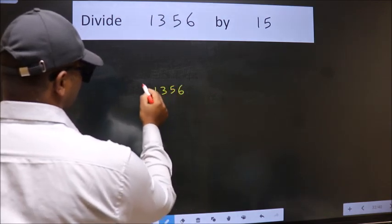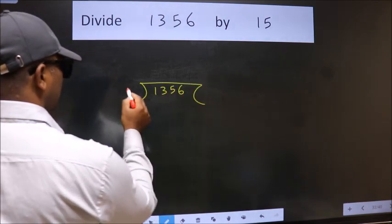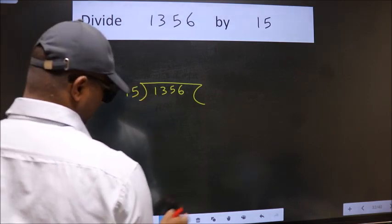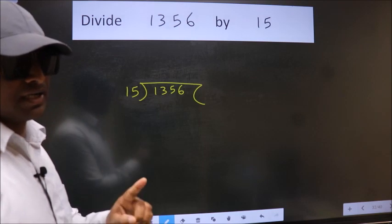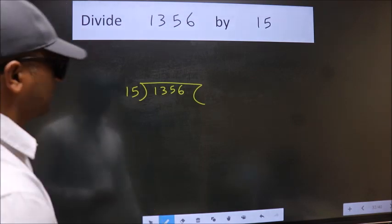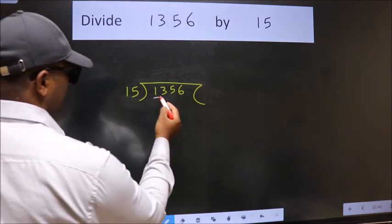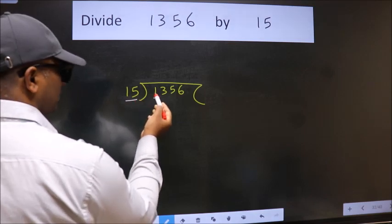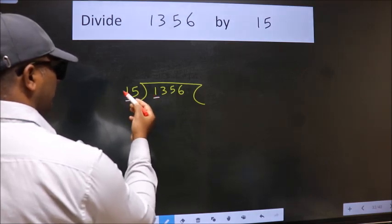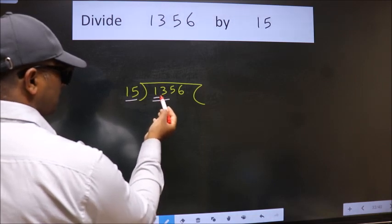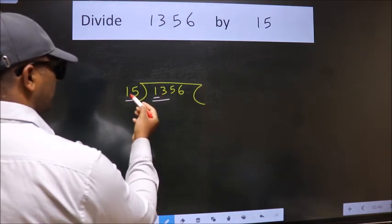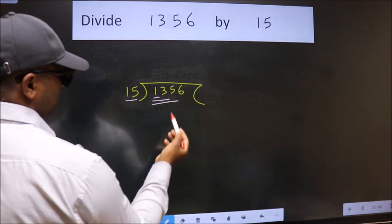1356 here, 15 here. This is your step 1. Next, we have 1. 1 is smaller than 15, so we should take 2 numbers: 13. 13 is still smaller than 15, so we should take 3 numbers: 135.